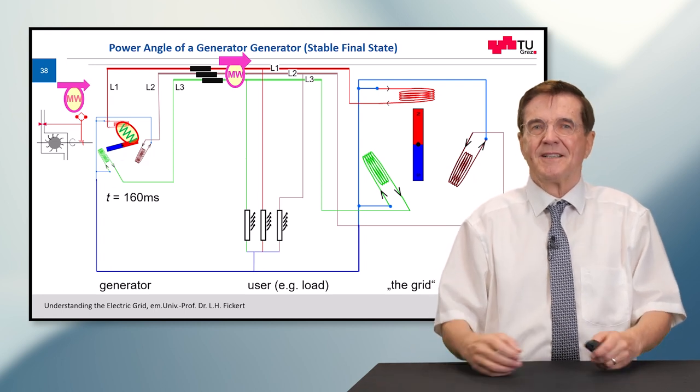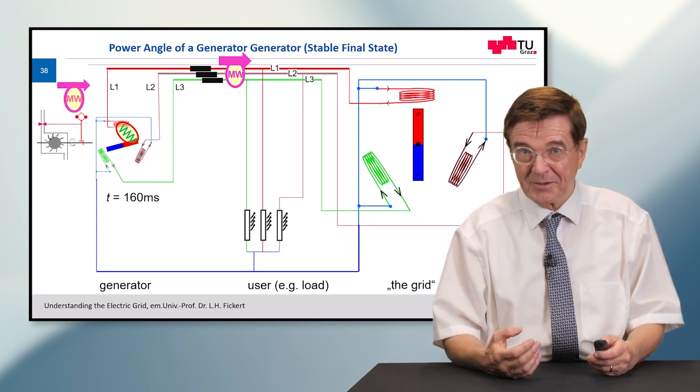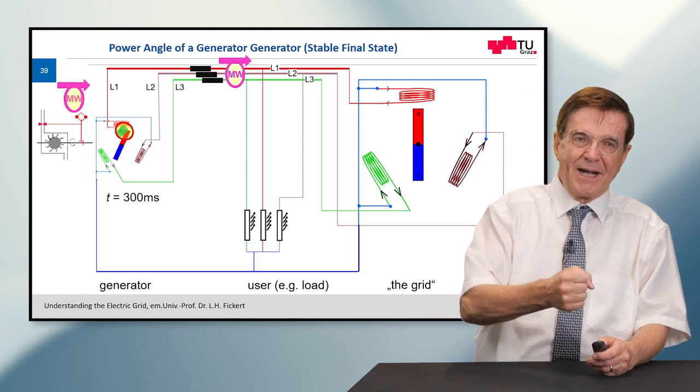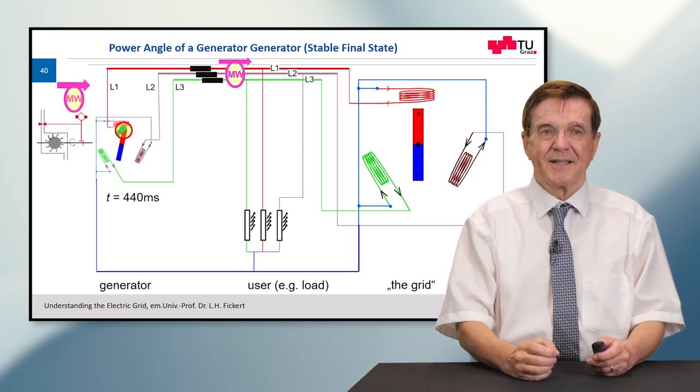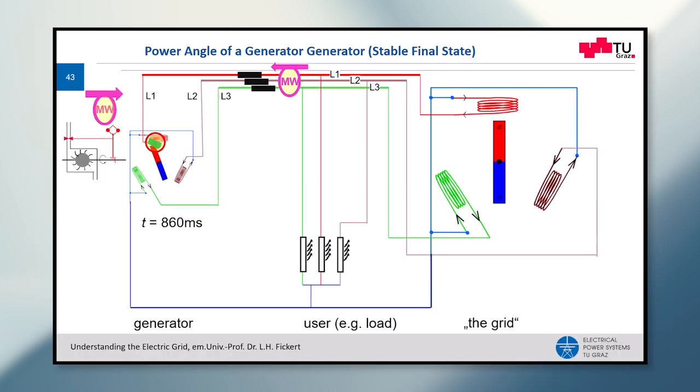So at the very next moment, this electromagnetic spring as we call it will bring back the generator, and even it can swing back into negative power. So it swings forth and back until it is stable again.